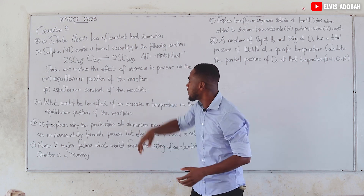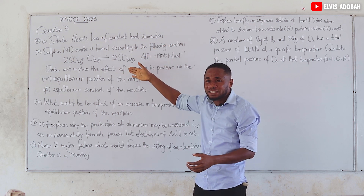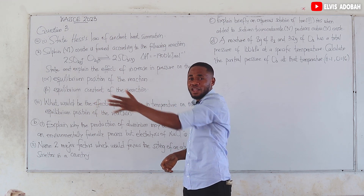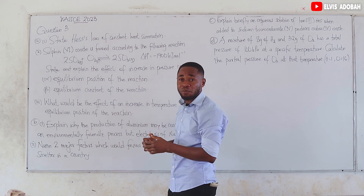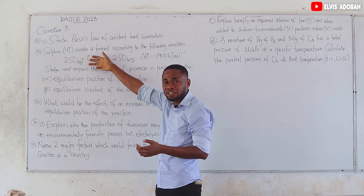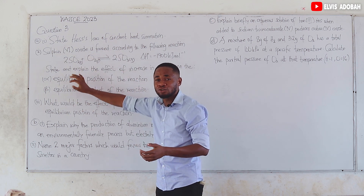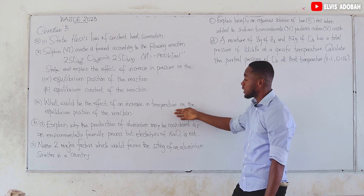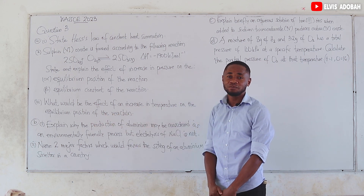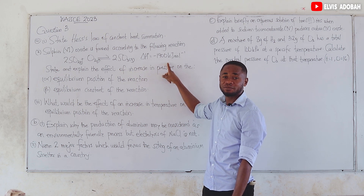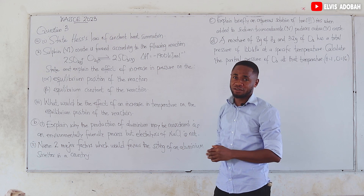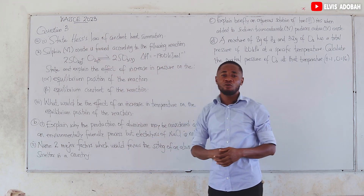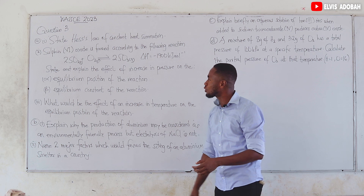Nobody wants stress, so if you increase the temperature you are stressing the system. Since heat is on the product side, increasing the temperature stresses the products, so some heat moves to the reactant side — the equilibrium shifts left. The forward reaction is exothermic, meaning the backward reaction is endothermic. Therefore, increasing temperature shifts the equilibrium position to the left, towards the reactants.